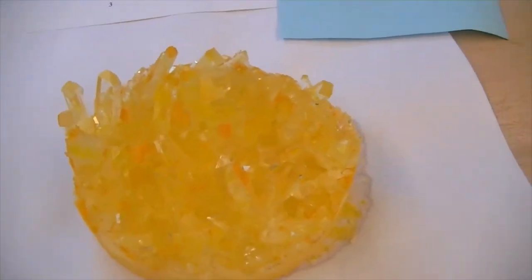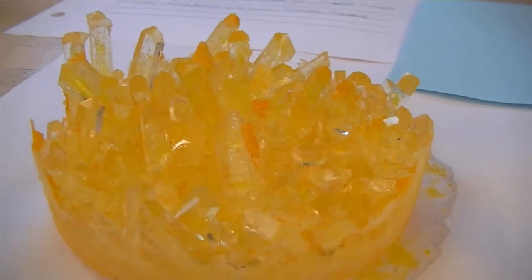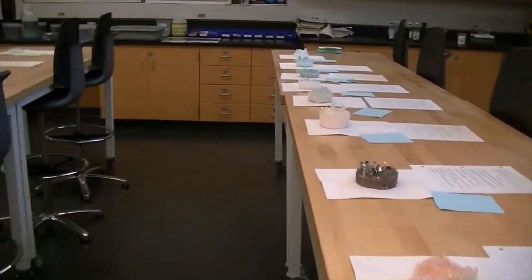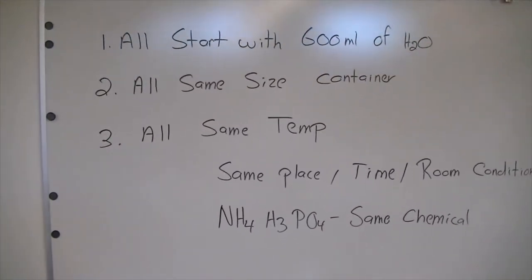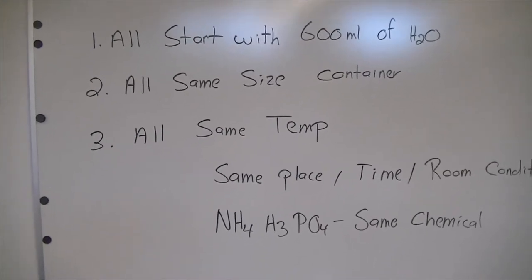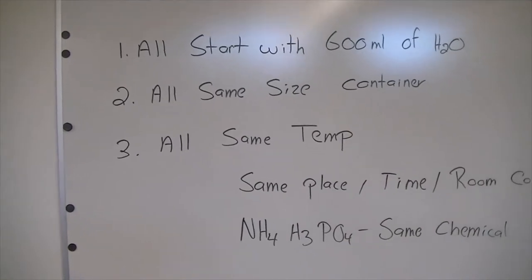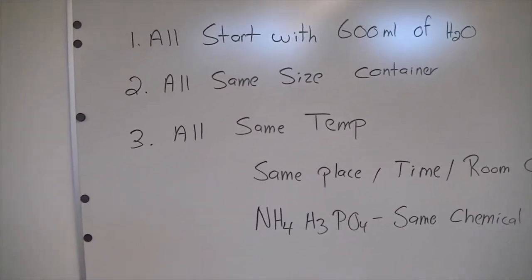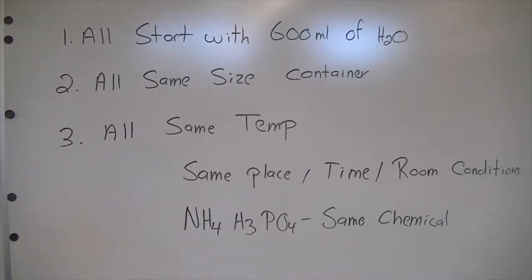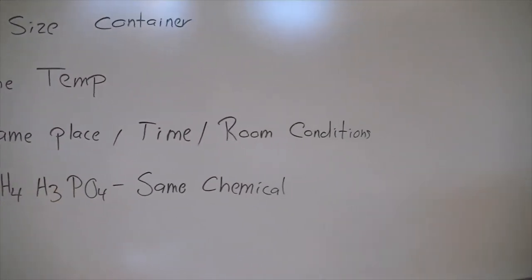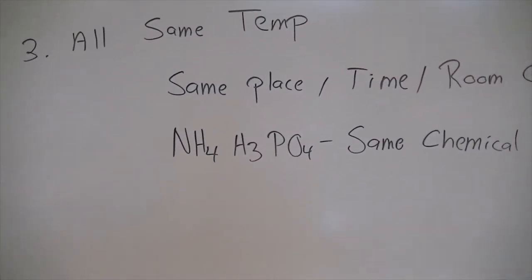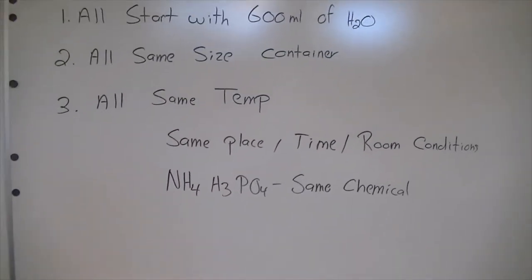And what I call the Cheetos group — pretty cool looking. You can see that people used different food colorings and even different concentrations of food coloring. The experiment is set up so we all start with 600 milliliters of water. All crystals are grown in the same size container, same size beaker, everything set to the same temperature of 210 degrees — just before boiling.